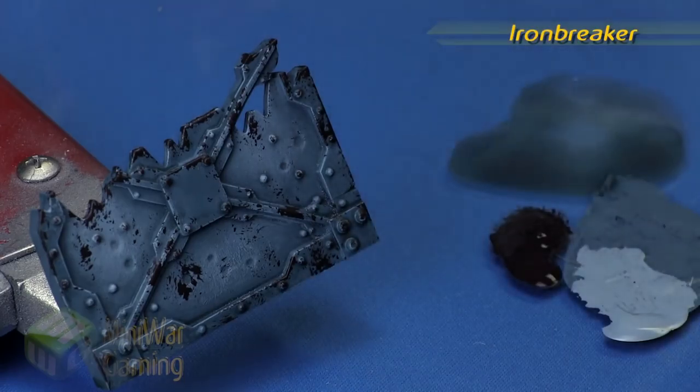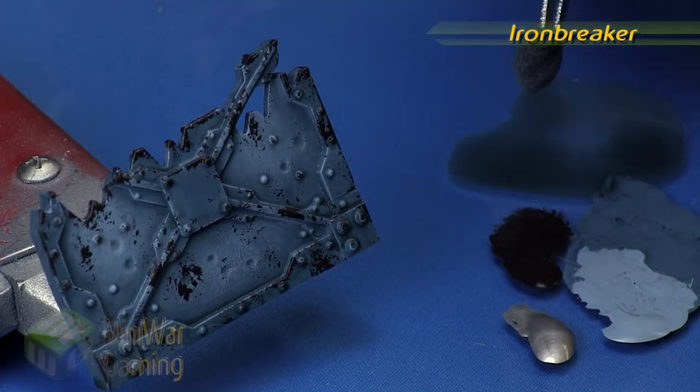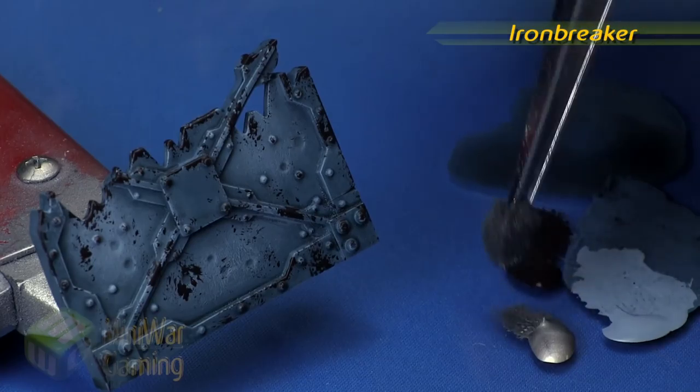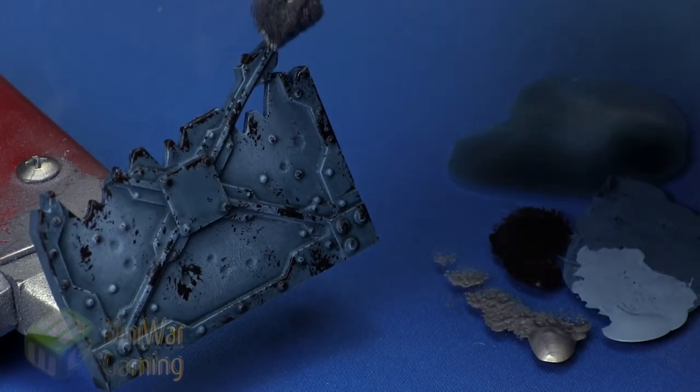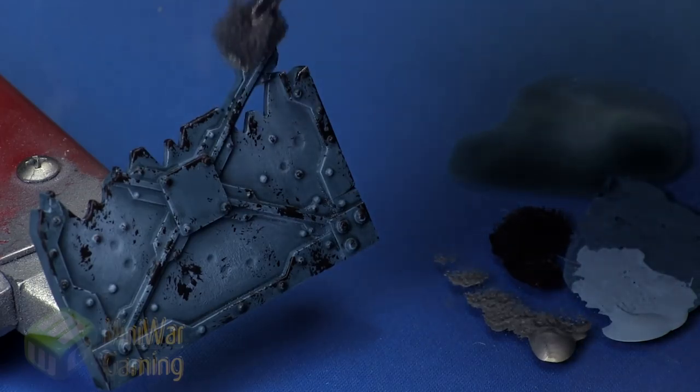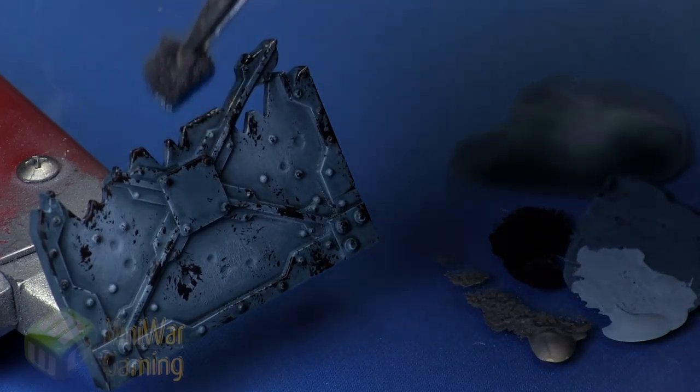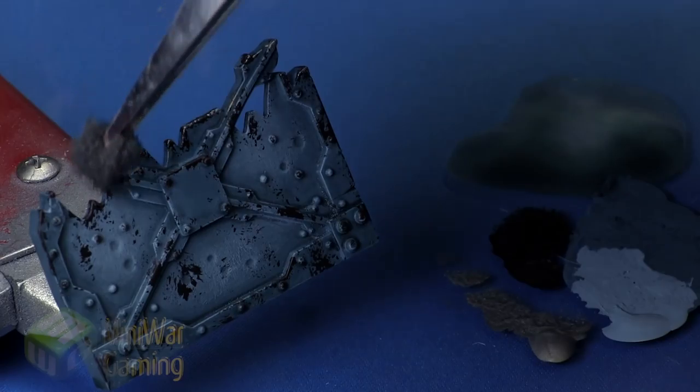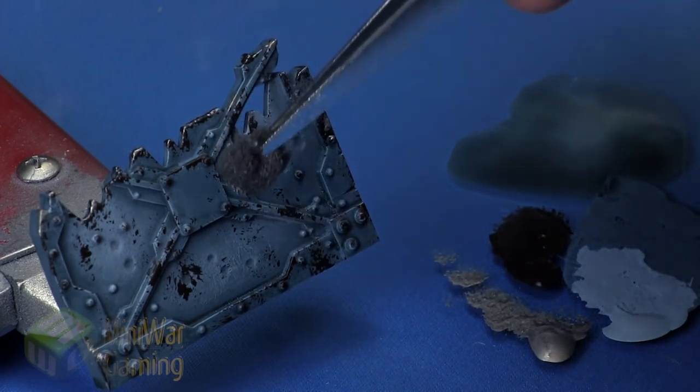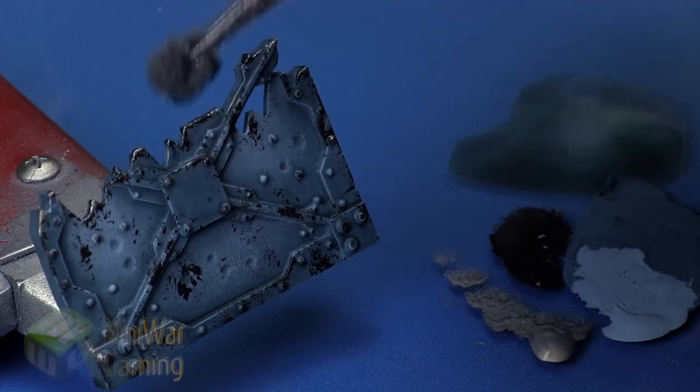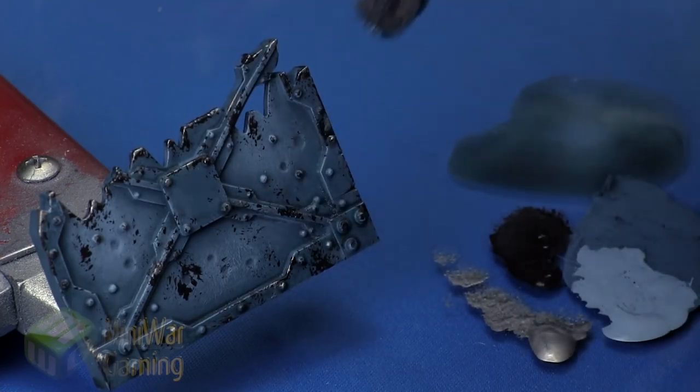Iron Breaker is next and this is going to be applied by sponge as well. We're grabbing a fresh piece of sponge and we're going for corners and the inside areas in which we had laid out the Rhinox Hide. We're applying this fairly carefully and being somewhat careful as we work our way around.